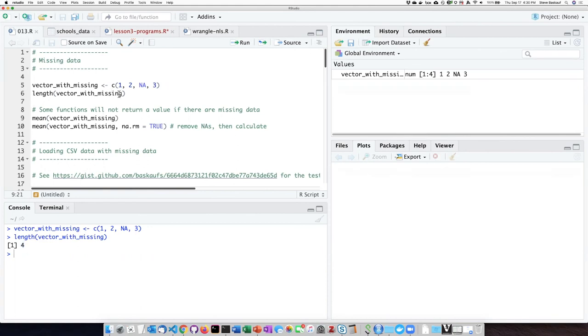If we try to carry out the averaging function called mean on this vector, we see that the answer we get is not available. In other words, R is telling us it cannot calculate the mean when it doesn't know what one of the numbers is.